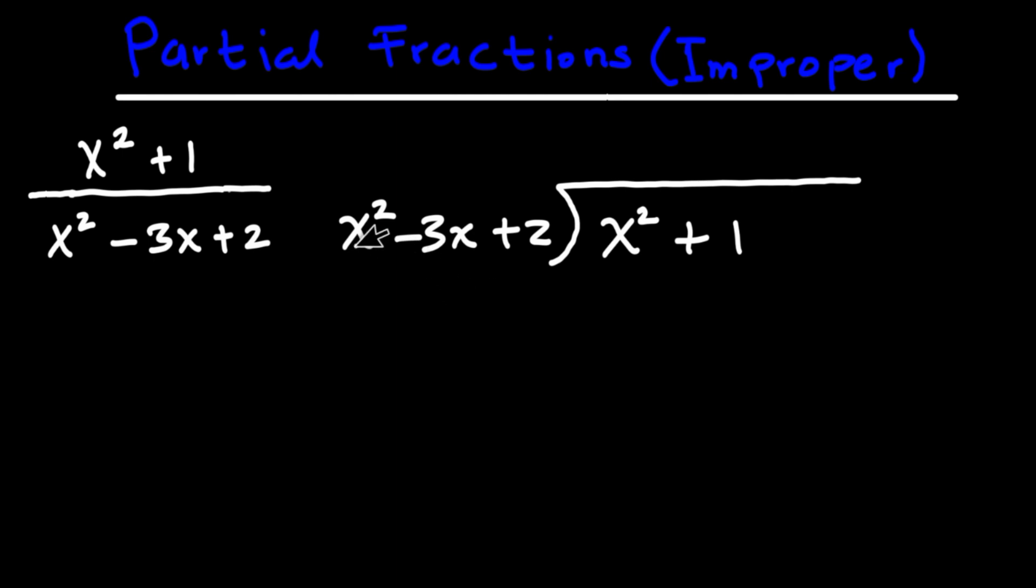What times x squared would give me x squared? That is pretty easy. That is just 1. 1 times x squared is x squared. 1 times negative 3x, that is negative 3x. Then 1 times 2, that is going to be positive 2. And the next thing we want to do is to subtract. x squared minus x squared, that is going to give us 0.